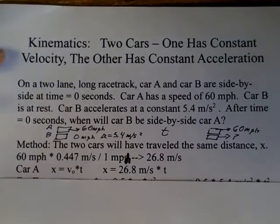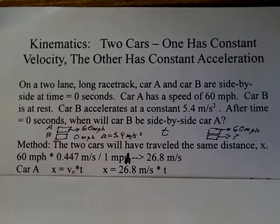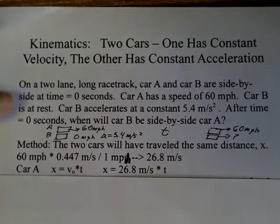And car A, its distance is described simply as distance equals rate times time. There's no acceleration for car A. So the distance that's unknown is equal to the rate for car A, a constant 26.8 meters per second, multiplied by the time that's unknown. There are two unknowns here. Well, if there are two unknowns, we need a second equation.